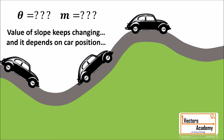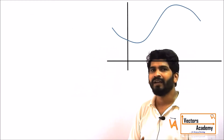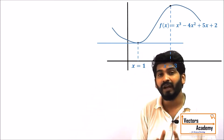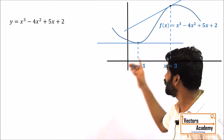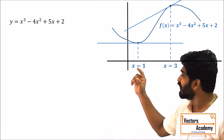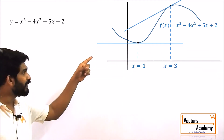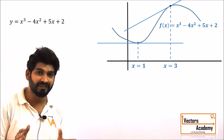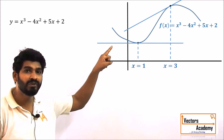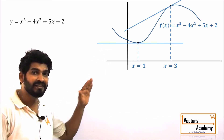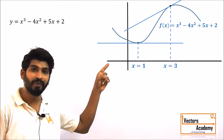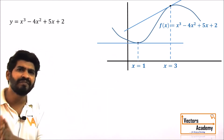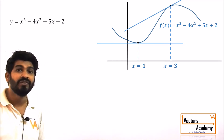Let us understand the variable slope of a curved road using derivatives. We have an equation in terms of y and the curve is shown in the diagram. We need to find the slope at two points: x = 1 and x = 3. At x = 1 the tangent drawn is horizontal, so the slope should be 0. At x = 3 the tangent is moving upwards, so the slope should be positive. Let us verify this using derivatives.